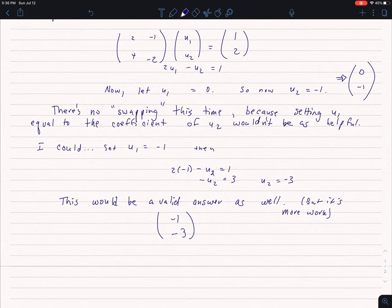Well let's see what happens if I did try to swap. So I'm going to let this, instead of u1 equaling 0, I'm going to let u1 equal negative 1. That's the coefficient in front of u2. If I do that, I'll do the same thing I did for the previous example, but now u2 ends up being negative 3. So that eigenvector, negative 1, negative 3, it is still a valid solution because there's an infinite number of solutions, but I think it's a lot harder to find. And it's no longer the simple swapping of coefficients.